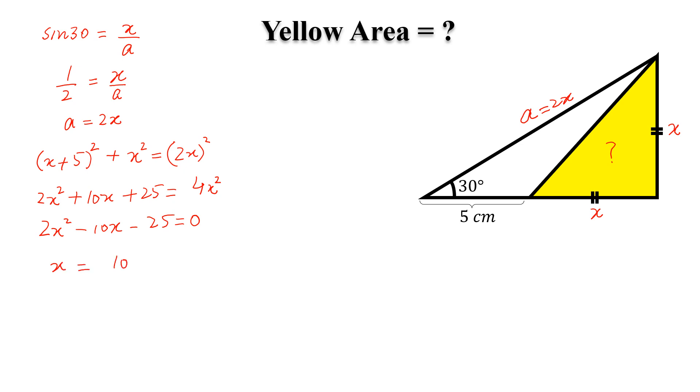So, x equal to 10 plus minus square root of (100 + 200), so this will be 300, divided by 2 times 2, which is 4.